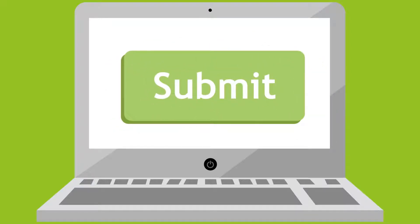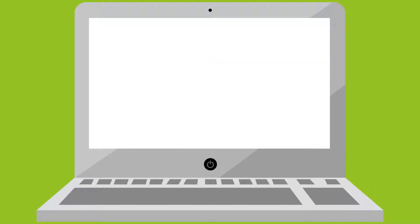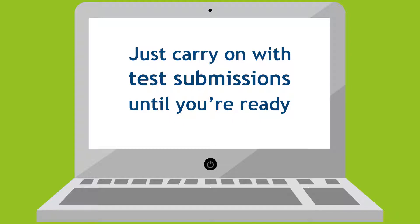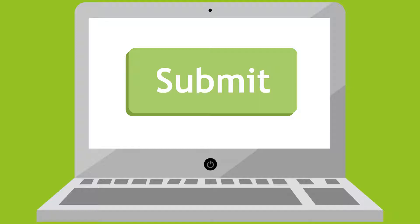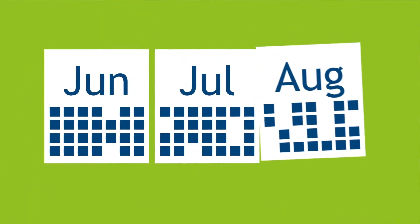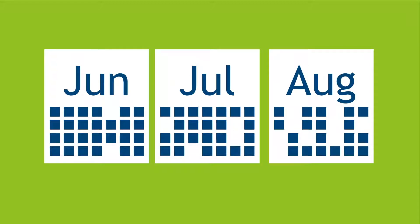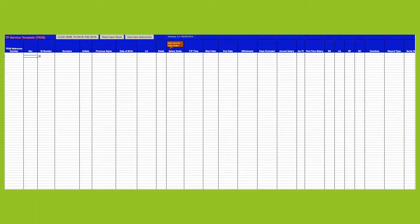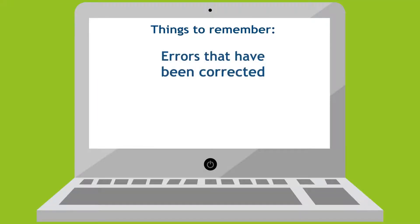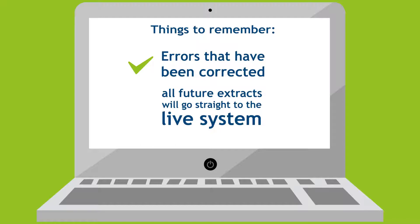Success criteria will be determined after the third submission to the test site. Don't worry if you don't pass — you'll just carry on with test submissions until you're ready. Once you have met the success criteria, we'll ask you to resubmit the files along with any amendments. These submissions will then update the live member records. Any gaps in service from the point of your last annual return to the point you joined MDC can be sent in either by a TR-28 or another MDC file. Remember, errors that have been corrected need to be re-uploaded, and once live, all future extracts will go straight to the live system.